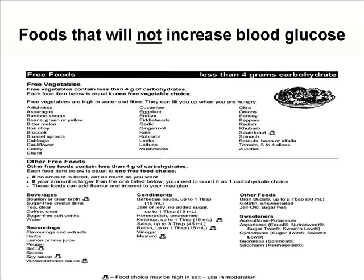Other free foods include beverages such as sugar-free crystal drinks, clear tea, clear coffee, sugar-free soft drinks, and water. You've got your seasonings such as spices and soy sauce. You also have condiments — if you stick to the portions listed, such as barbecue sauce up to one tablespoon, it will not increase your blood sugar. No-added-sugar jelly at one tablespoon and ketchup at one tablespoon will not increase your blood sugar.